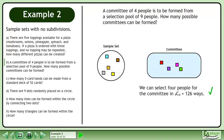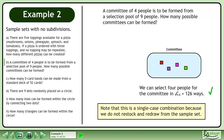We can select four people for the committee in 9 choose 4 equals 126 ways. Note that this is a single case combination because we do not restock and redraw from the sample set.